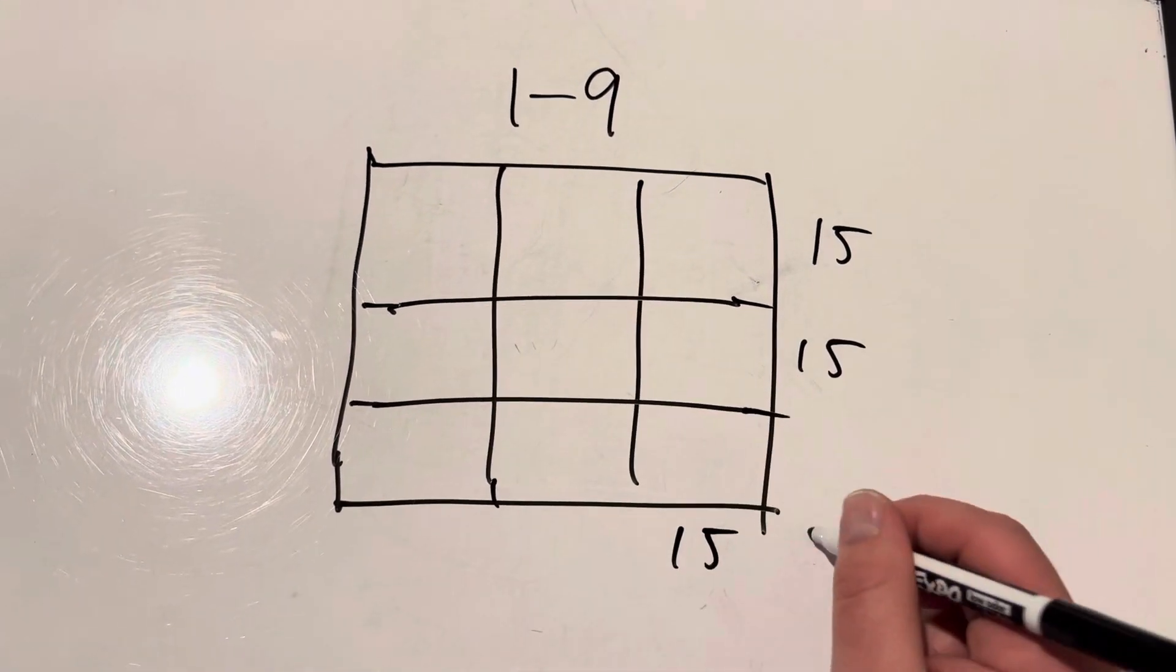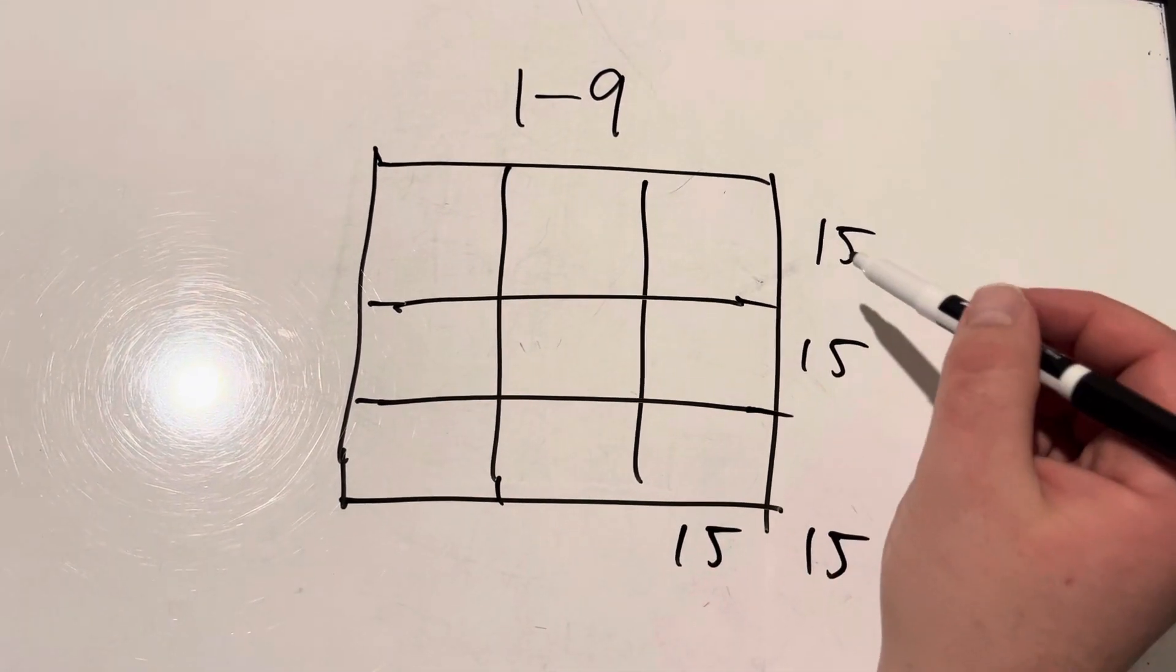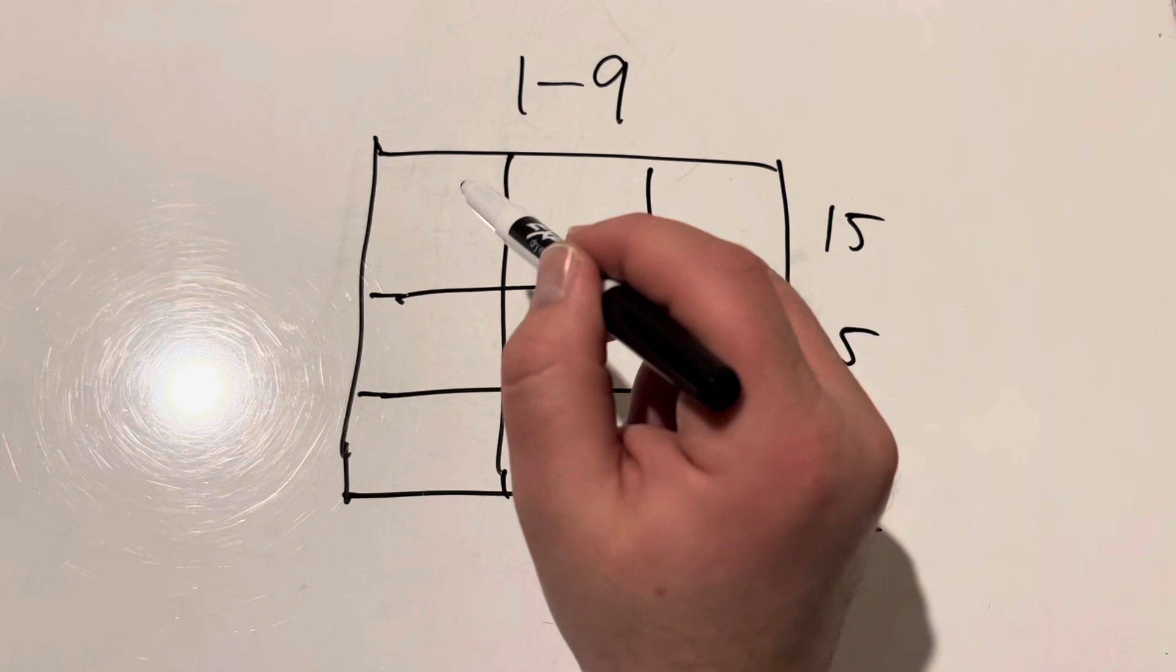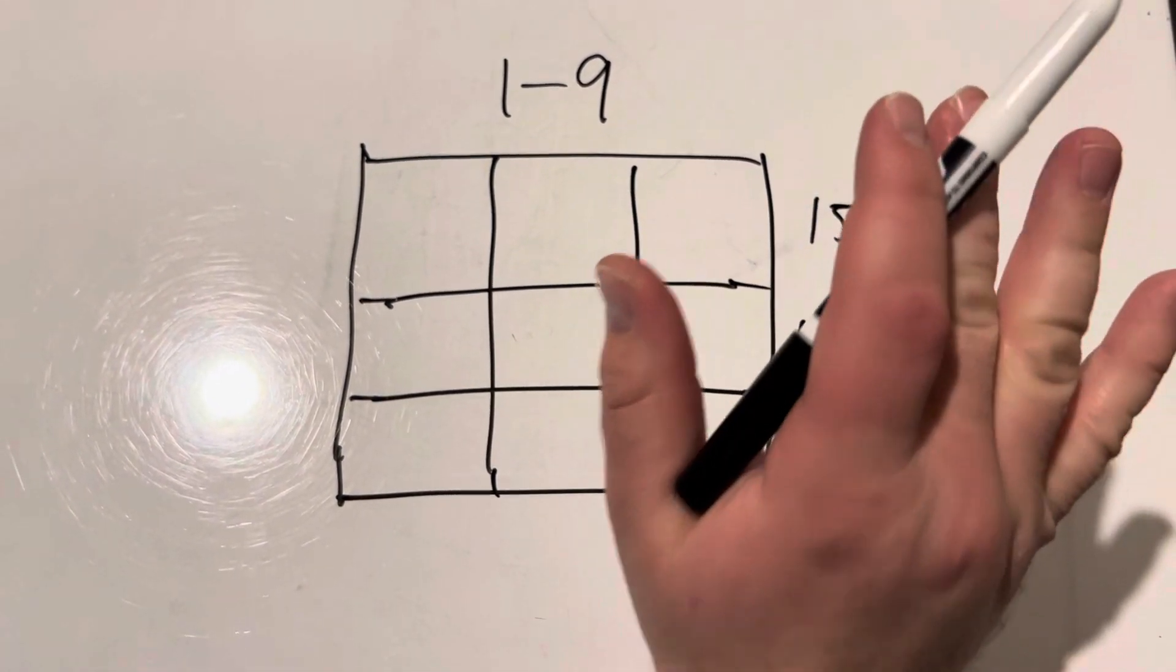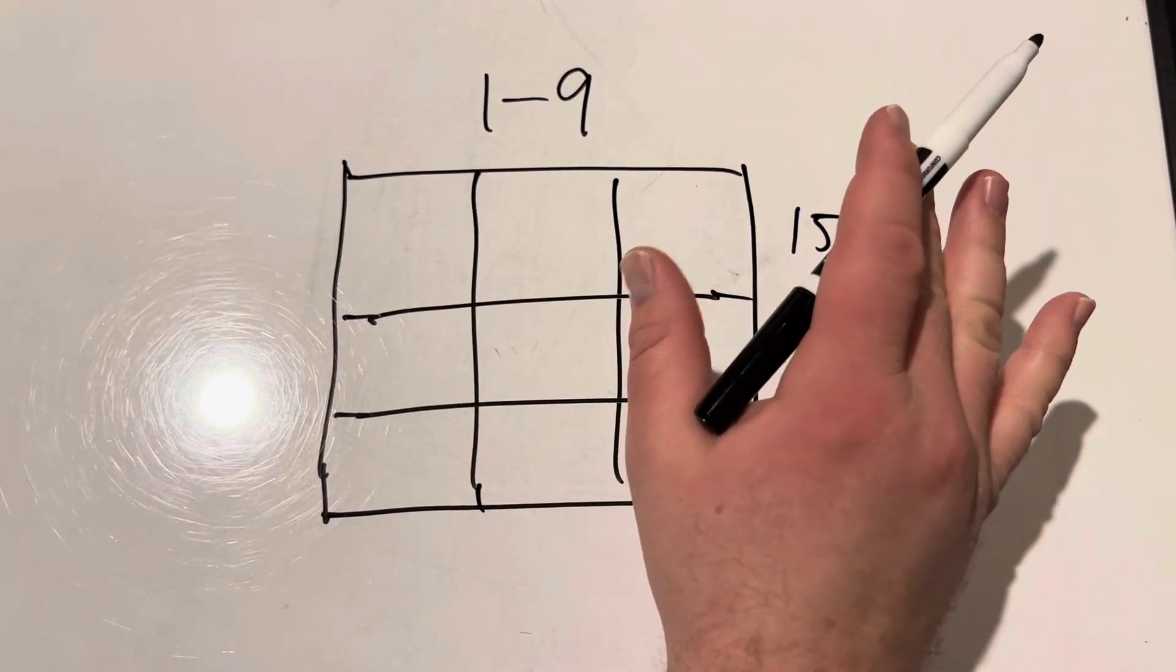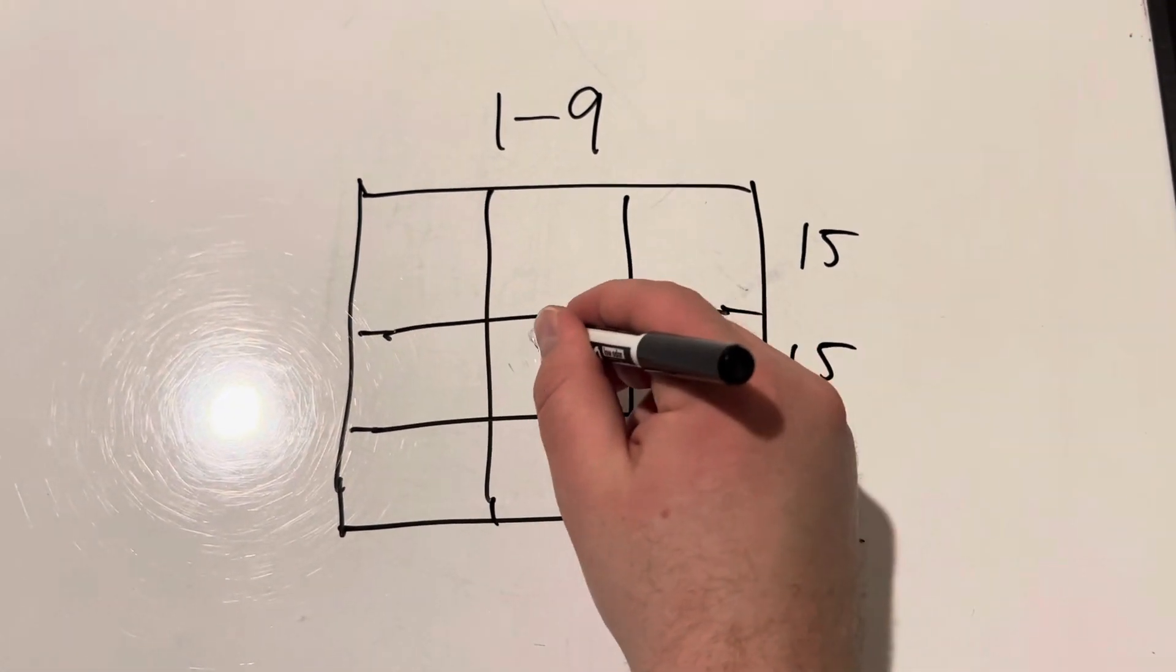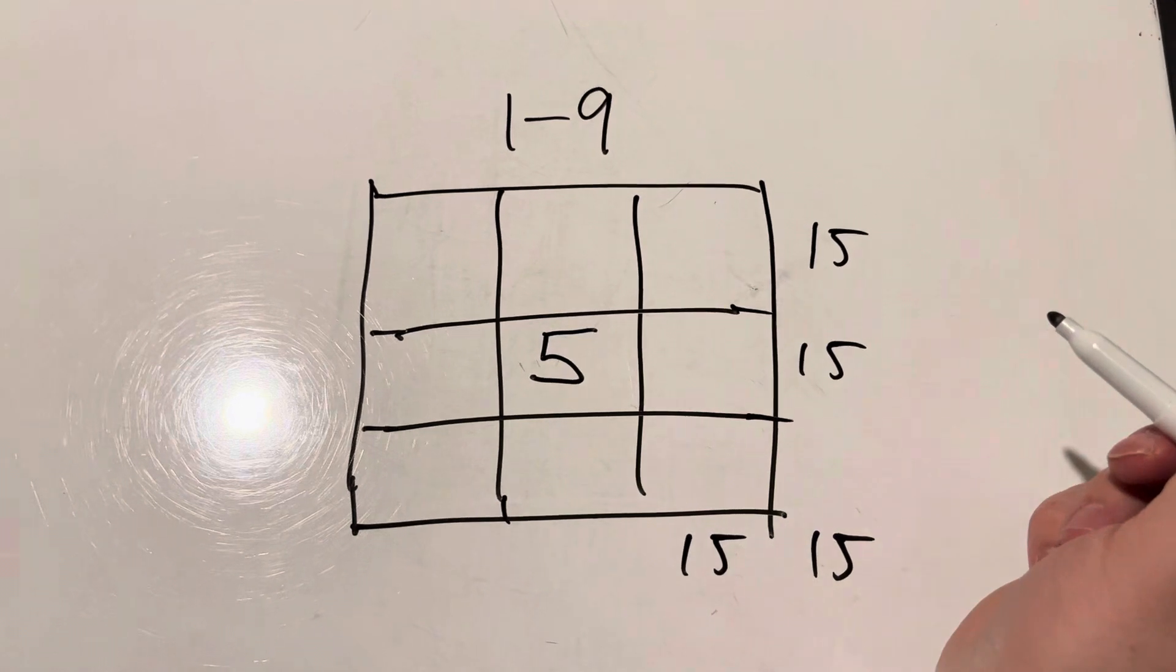Even if you go diagonal, all add up to 15. Now you can spend hours plugging in all sorts of different combinations of numbers. The key that'll make this puzzle really easy to solve is to always start by putting five in the middle.